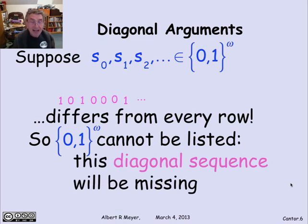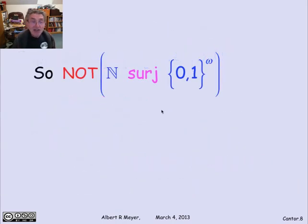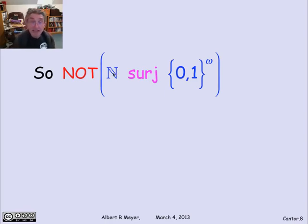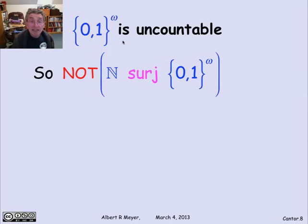That immediately tells us it's over: any attempt to list all of the elements in {0,1}^ω is going to omit a diagonal element. It's not possible to list all of them. In other words, there isn't any surjection from the non-negative integers to {0,1}^ω, because if you give me any sequence of binary sequences, I know exactly how to find something not in it. There can't be a surjection from ℕ to {0,1}^ω. And that's why we can say that {0,1}^ω is uncountable.